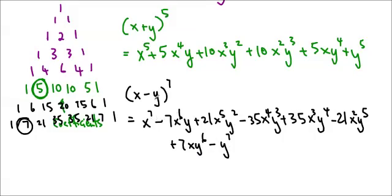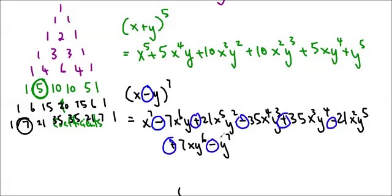Because I have a minus here, the signs are alternating: minus, plus, minus, plus, all the way through. If I have a plus — like x plus y — then all terms are added together. But if I have x minus y, then the signs alternate.